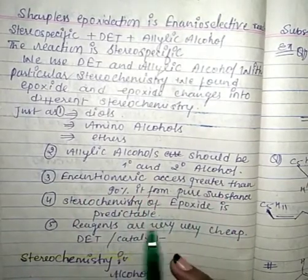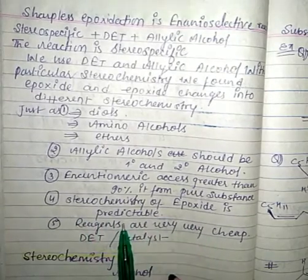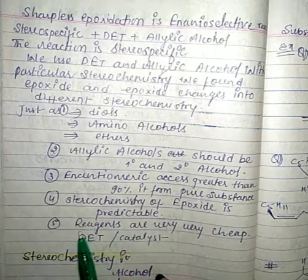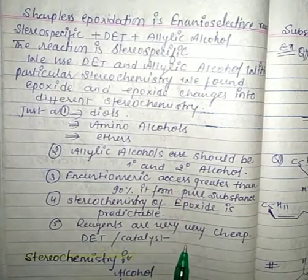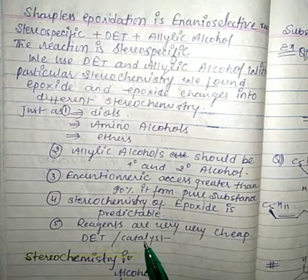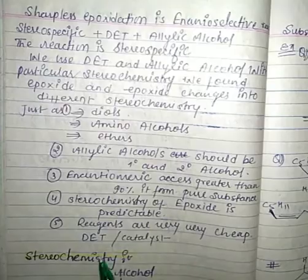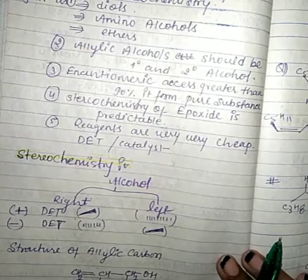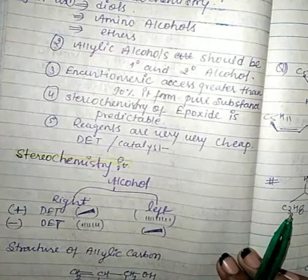The enantiomeric excess is greater than 90%, forming a pure substance. The fourth point is that the stereochemistry of the epoxide is predictable. The fifth point is that the reagents — DET and the catalyst — are very cheap.